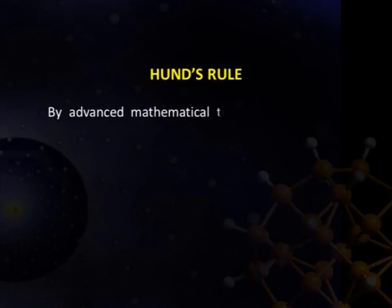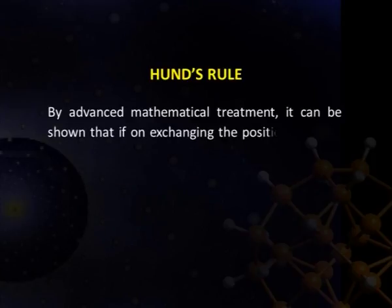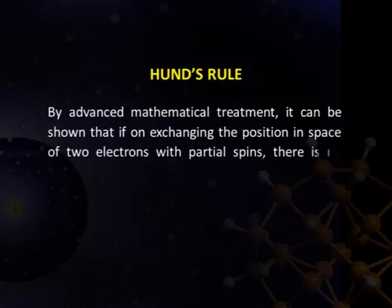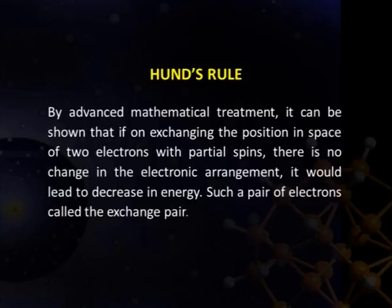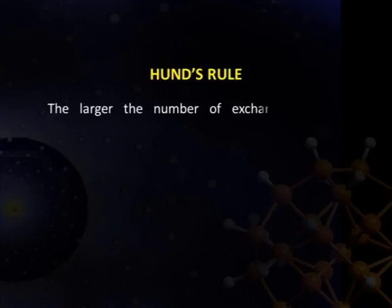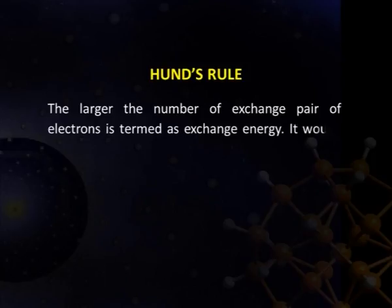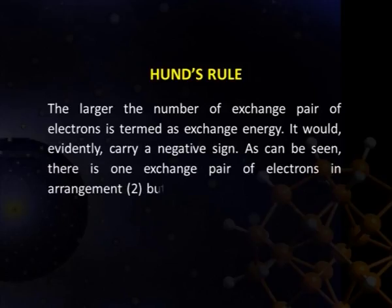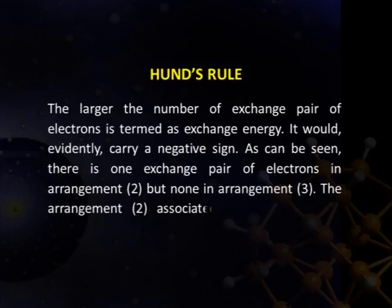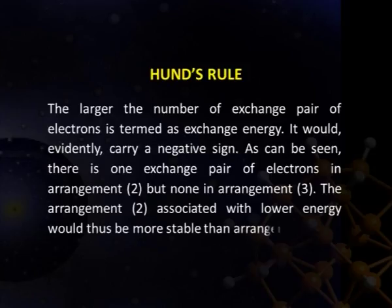By advanced mathematical treatment, it can be shown that if, on exchanging the positions in space of two electrons with parallel spins, there is no change in the electronic arrangement, it leads to a decrease in energy. Such a pair of electrons is called an exchange pair, and the energy associated is termed exchange energy, which carries a negative sign. There is one exchange pair in arrangement 2, but none in arrangement 3.